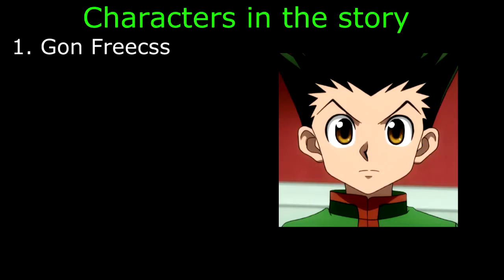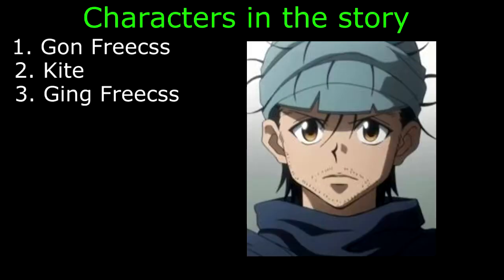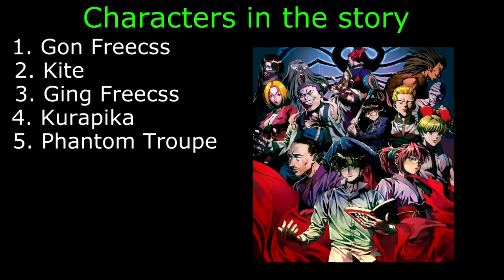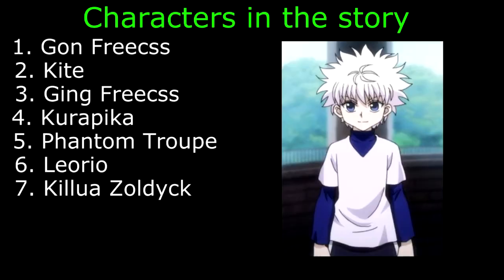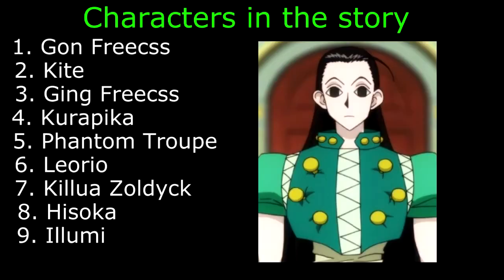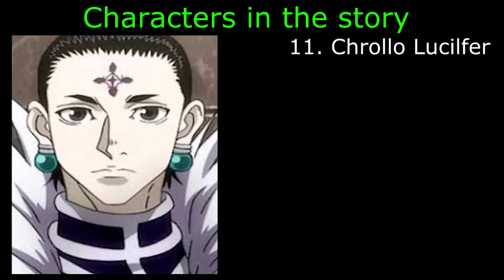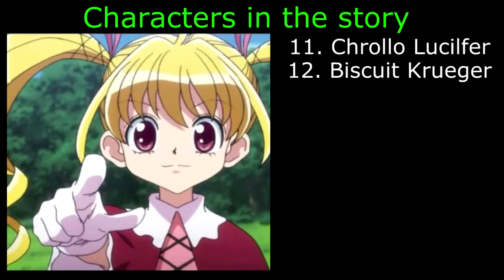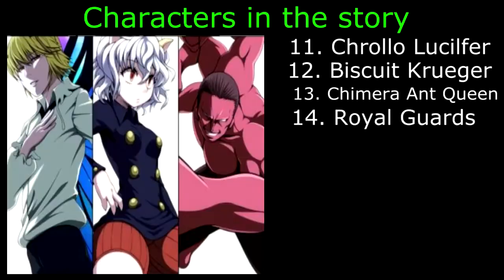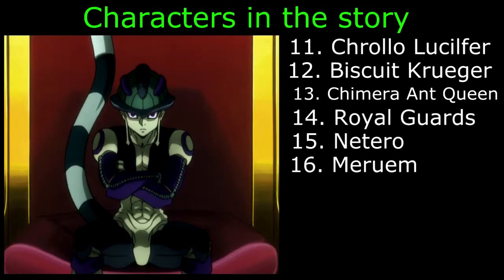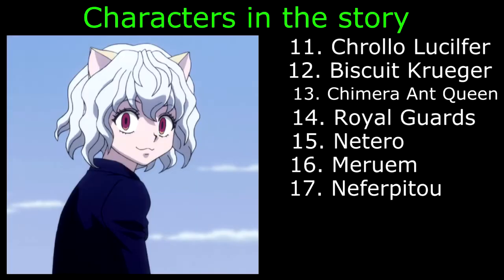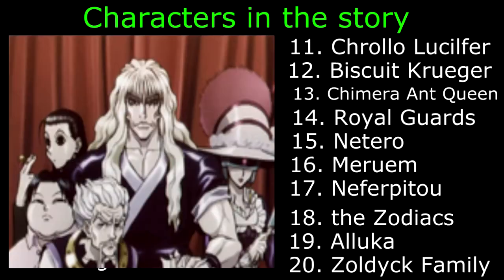The characters in our story about Hunter x Hunter are Gon Freaks, Kite, Ging Freaks, Kurapika, Phantom Troop, Leorio, Killua Zoldyck, Hisoka, Illumi, Wing, Chrollo Lucifer, Biscuit Kruger, Chimera Ant Queen, Royal Guard of the Chimera Ants, Netero, Murem, Neferpito, the Zodiacs, Alluka, and the Zoldyck family. There are different kinds of characters in a story: Protagonist, Antihero, Antagonist, Villain, Foil, Confidant, Dynamic, Static, Round, Flat, and Stock.